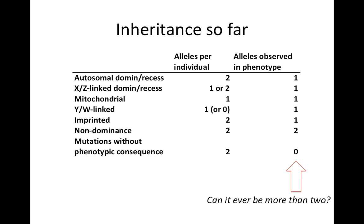In this video, I'd like to talk about more complex forms of inheritance when multiple genes are involved. So this is what we've gone through so far: different kinds of autosomal and X-linked dominance, mitochondria and Y-chromosome imprinting, and we talked about cases where there's not clear dominance, and even neutral mutations.